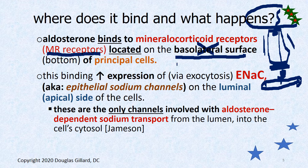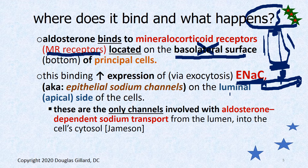So when aldosterone binds to these MR receptors on the basolateral surface of principal cells, a bunch of stuff happens. Specifically, it causes the expression of ENAC channels — epithelial sodium channels — and they're put on the luminal or apical surface of these principal cells.